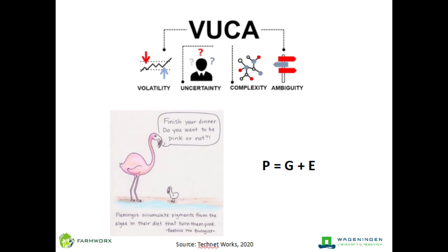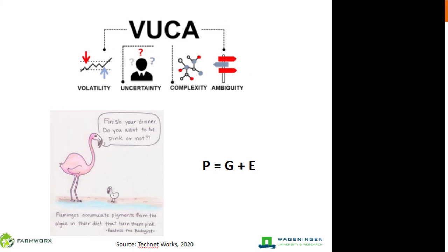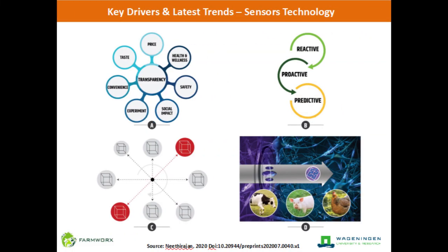Sensor technology is nothing new. There are more than 20 to 25 different types of sensors right now in each and every one of your mobile phones. You already use facial recognition tools to log into your laptop or smart mobile phone. But what are the key drivers — what makes us want to adopt and embrace sensing technology in animal farming?